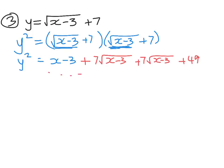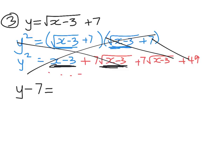Now we could keep going on that, but you can see we've got more trouble. We've got an x here and we've got a root x minus 3 here. So we do not want to do that. What we want to do instead is first subtract 7 from both sides. So y minus 7 equals root x minus 3.